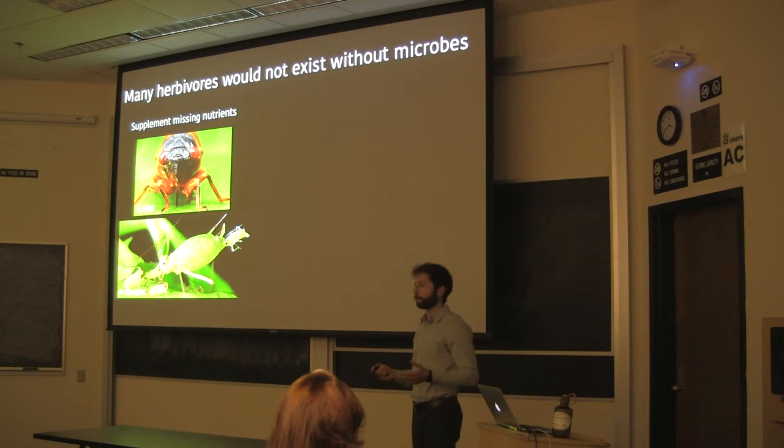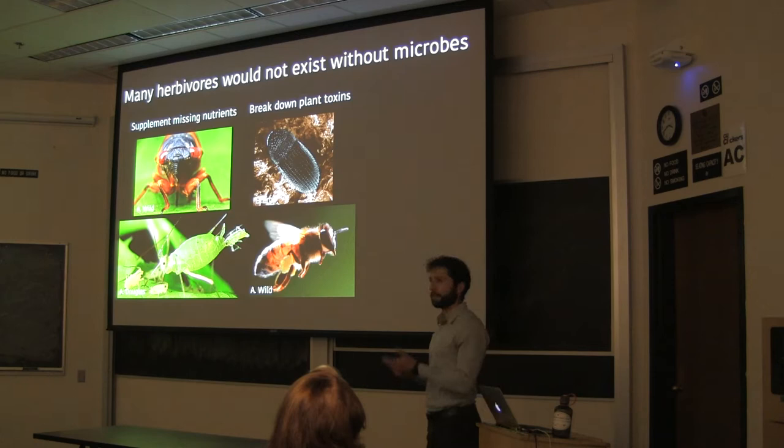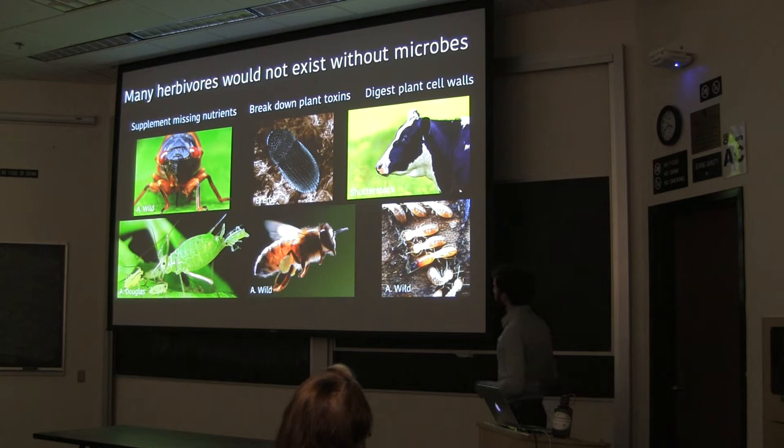Likewise, other insects like the coffee berry beetles and honeybees have gut microbes that break down toxins in their diet that would otherwise make that diet poisonous. And of course there are classic examples of ruminants like cows, and other insects like termites, that have gut microbes that break down cell wall material, which is really tough to digest.